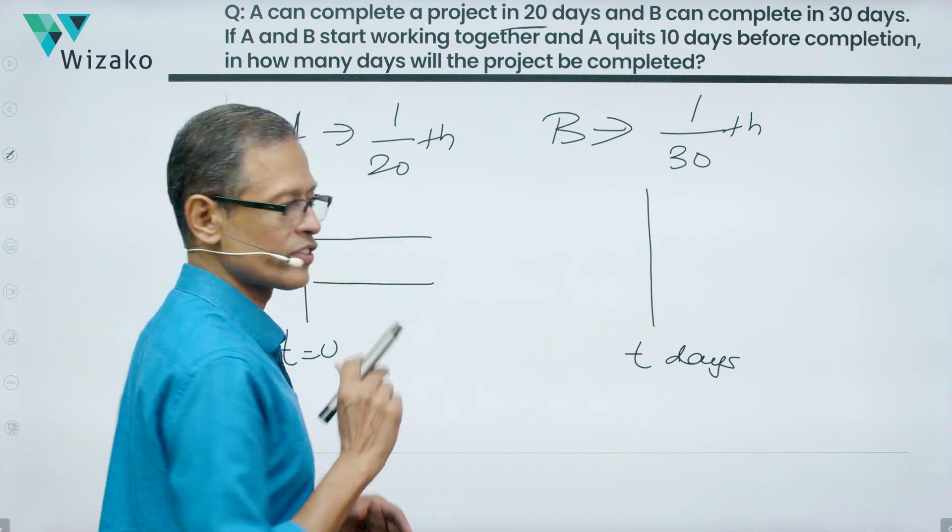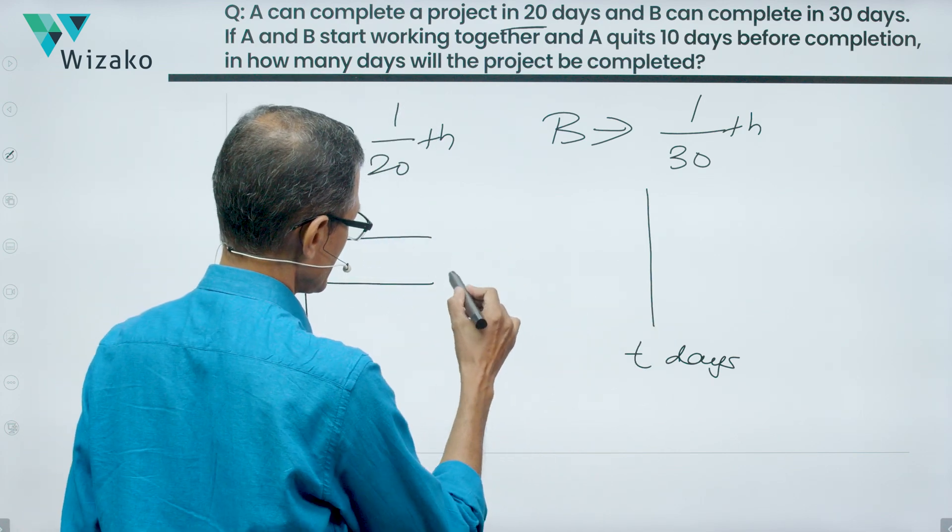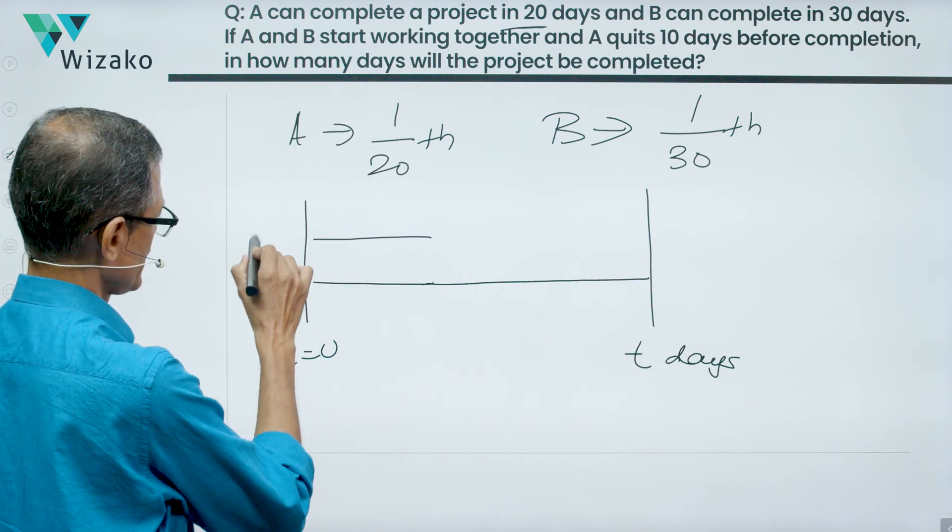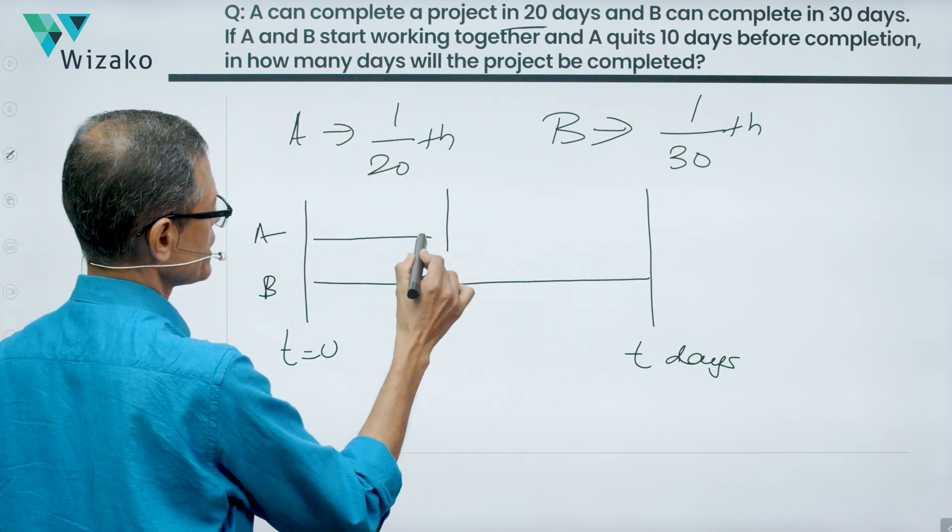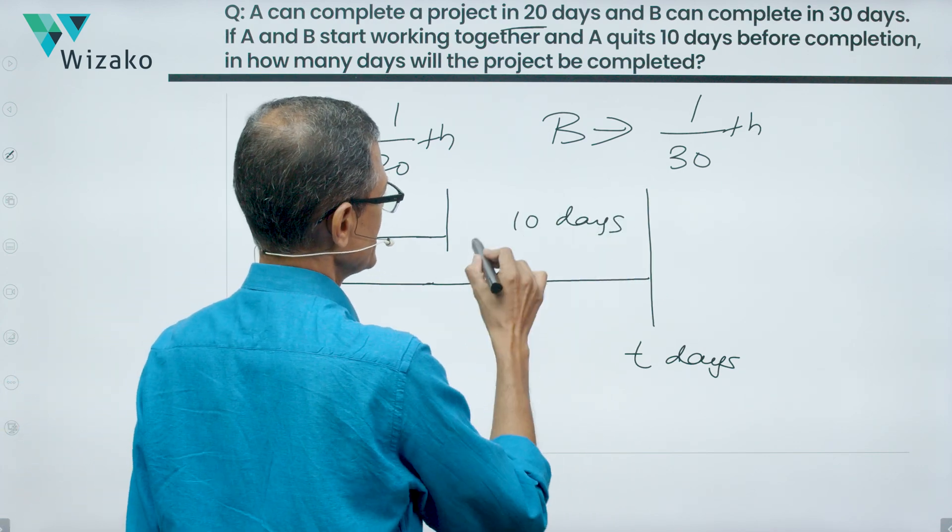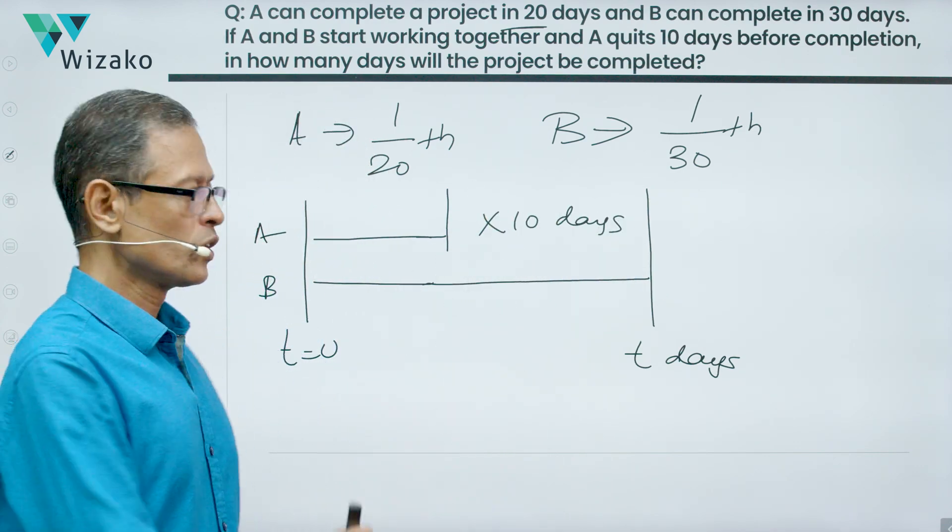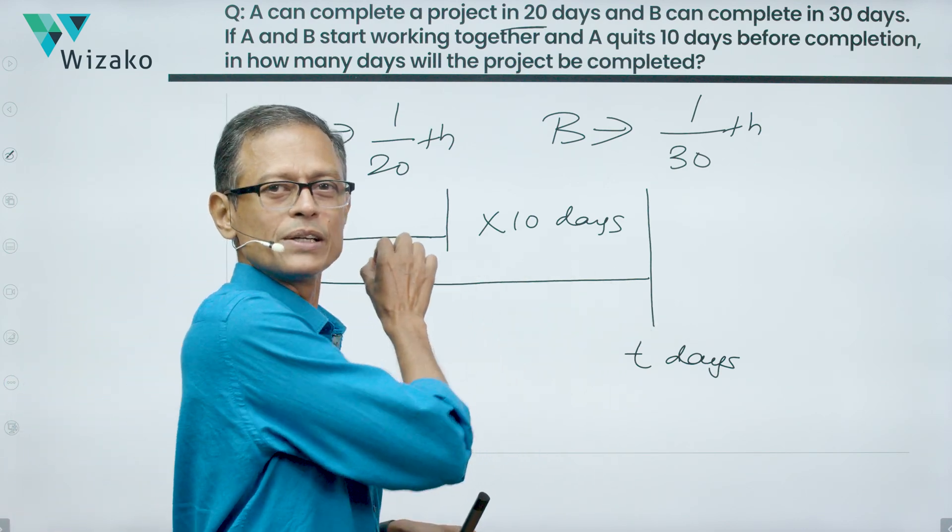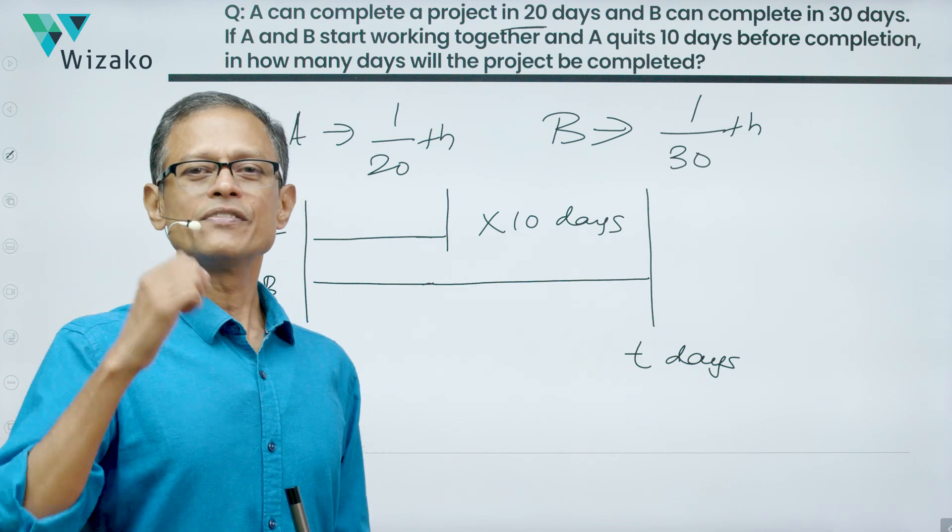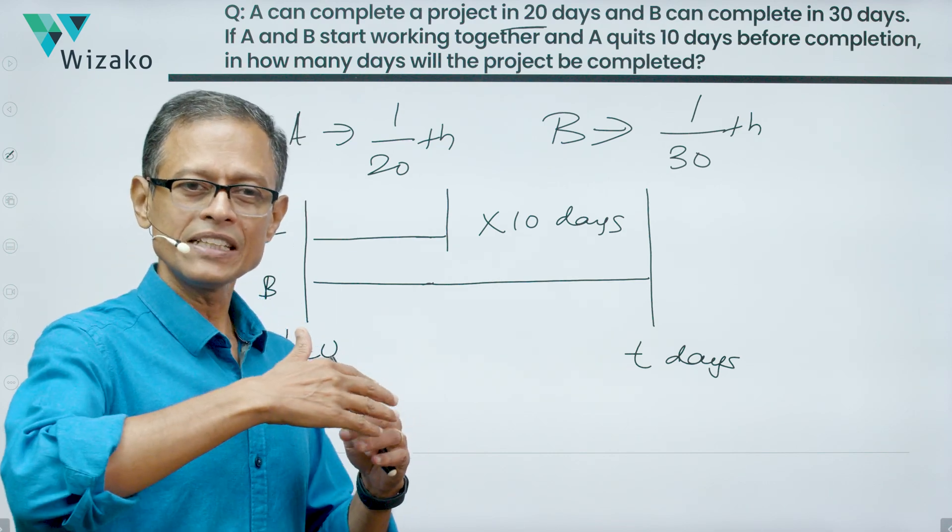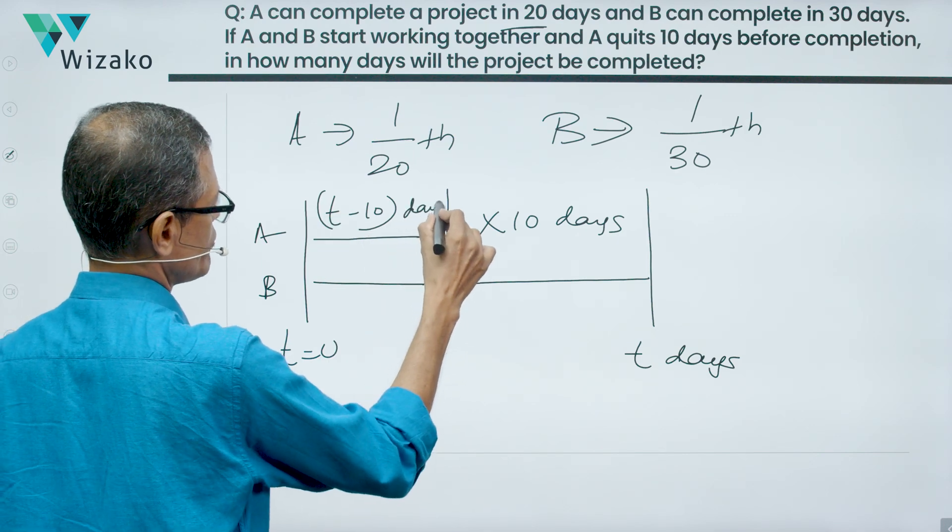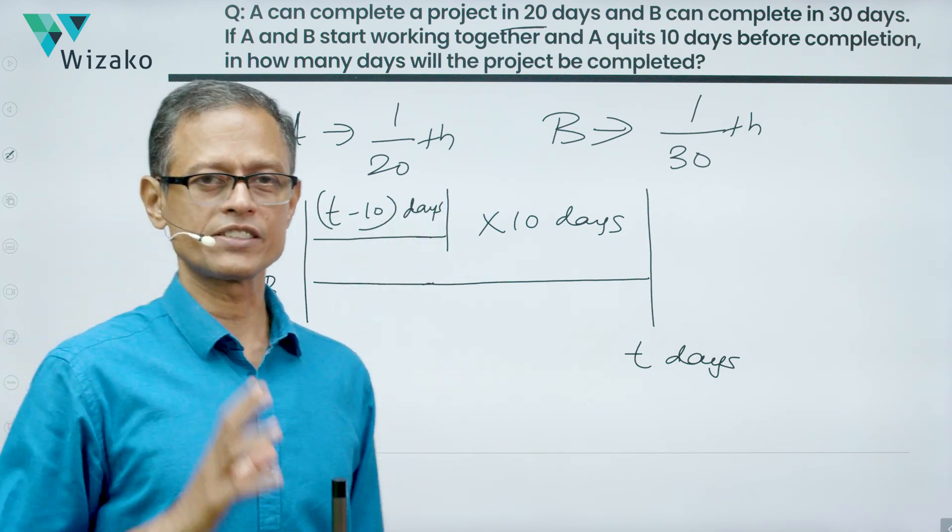However long it takes to complete the project, the last 10 days of it, only B works. B works the entire duration. A works only up till this point. We do not know what that point is, but we know that the last 10 days, A does not work. So if it's a 12 day long project, only 2 days A works. If it's a 17 day long project, only 7 days A works. If it's a T day long project, leaving the last 10 days, the first T minus 10 days is what A works in this joint venture project.